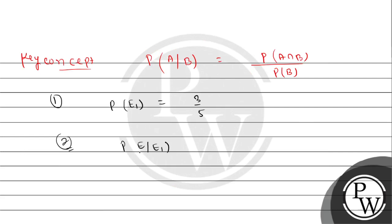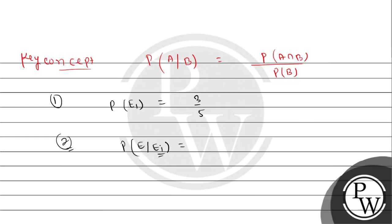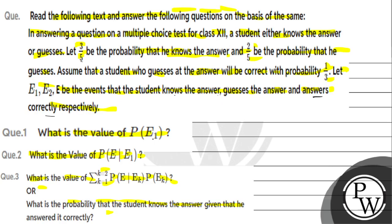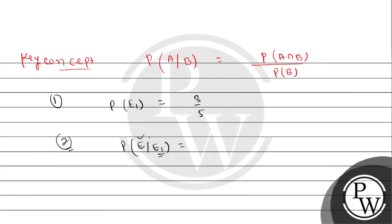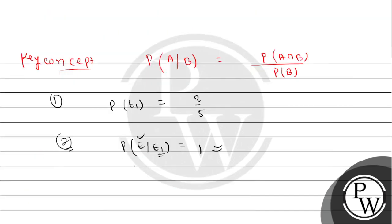For Part 2, P(E|E1) is the probability that the student answers correctly given that he knows the answer. If the student knows the answer, then answering correctly is a sure event. So P(E|E1) = 1.